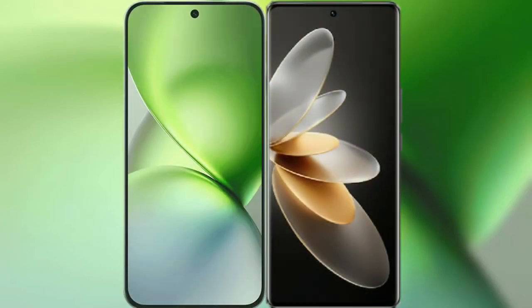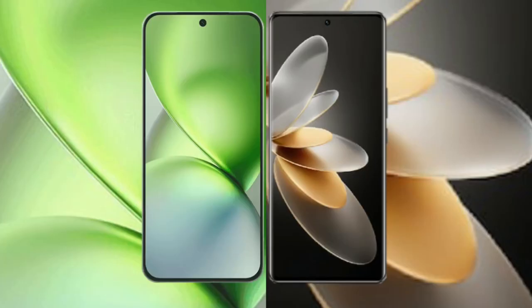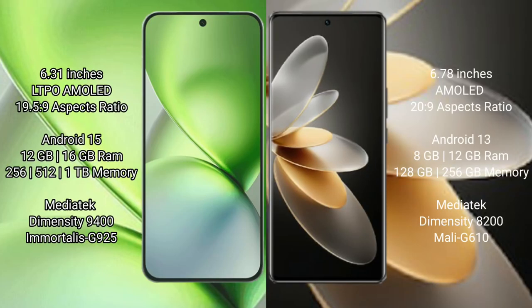I will compare the new Vivo X200 Pro Mini with Vivo V27 Pro. Vivo X200 Pro Mini has a 6.31-inch LTPO AMOLED display with an aspect ratio of 19.5:9. Vivo V27 Pro has a 6.78-inch AMOLED display with an aspect ratio of 20:9.